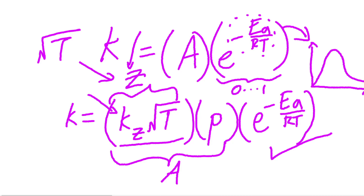Hopefully this video gave you some more insight into the Arrhenius equation and the meaning behind it. This expansion of A into its different components — P and Z — hopefully allows you to understand the equation more deeply. If you enjoyed this video, be sure to subscribe or leave a comment, or email me at watchmedomath@gmail.com. Until next time, thank you for watching.